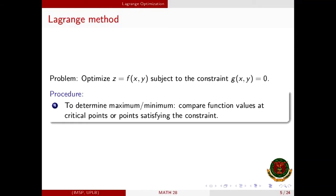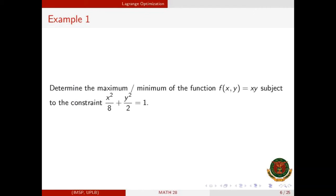That's it — doable, right? You may pause and review the four steps in Lagrange optimization before proceeding. Now let's go to our first example: Determine the maximum or minimum of the function f(x,y) = x·y subject to the constraint x²/8 + y²/2 = 1.